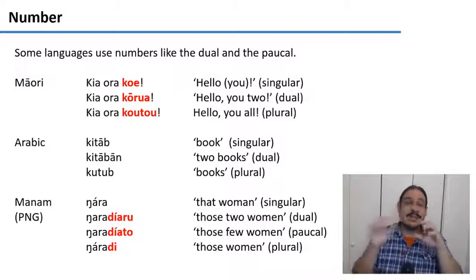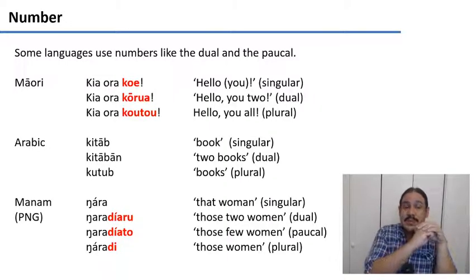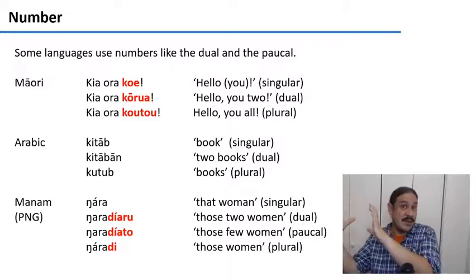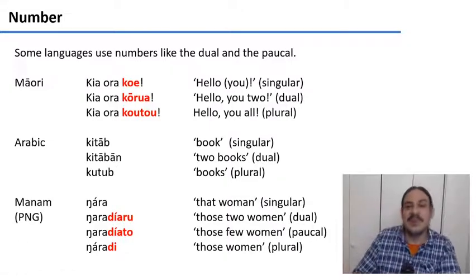So as you can see, some languages have no morphemes for number, and some languages have quite a few morphemes for number on nouns.